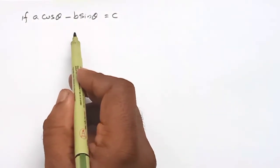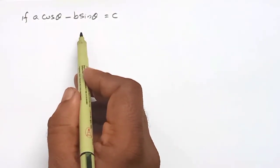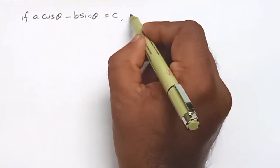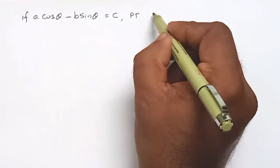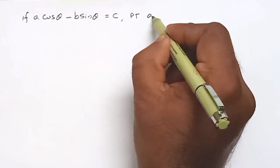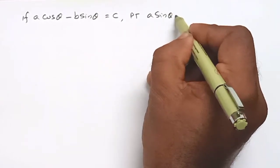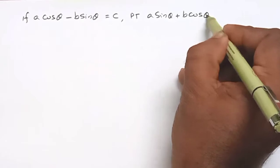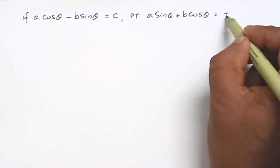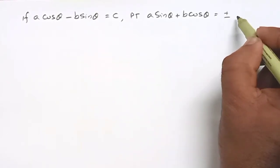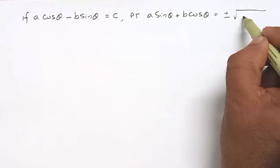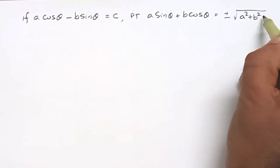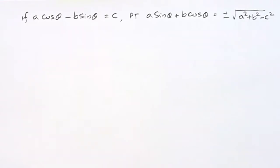If A cos theta minus B sin theta is equal to C, prove that A sin theta plus B cos theta is equal to plus or minus root of A squared plus B squared minus C squared.